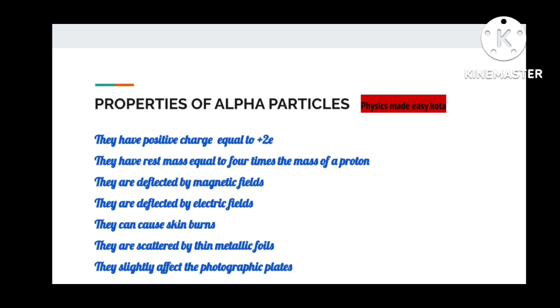Positively charged rays are the alpha rays and the alpha particle is equivalent to the helium nucleus. It contains two protons and two neutrons. Here are some properties: they have rest mass equal to four times the mass of the proton. They are deflected by magnetic field as well as by electric field. They can cause skin burns. They are scattered by thin metallic foils and they slightly affect photographic plates.